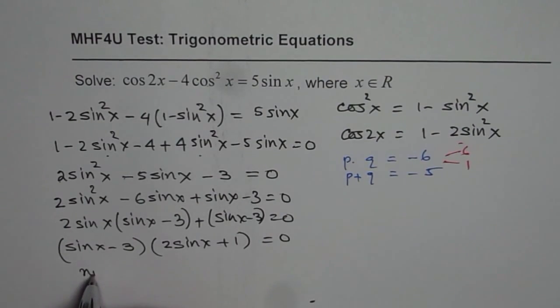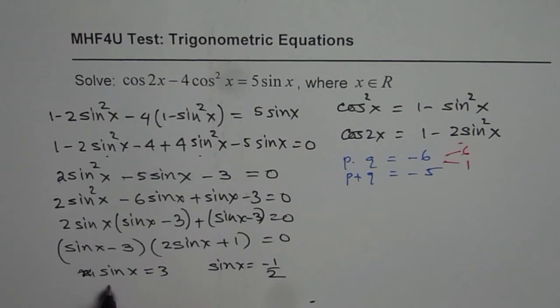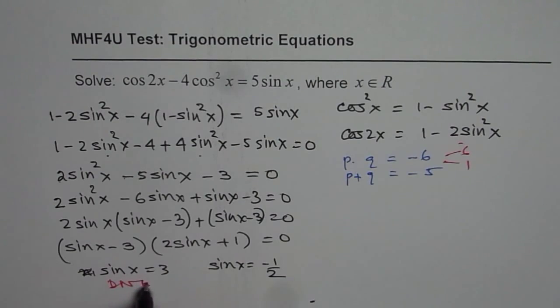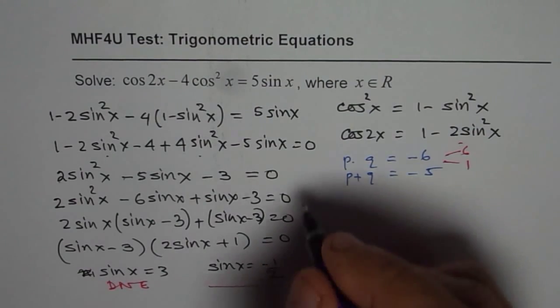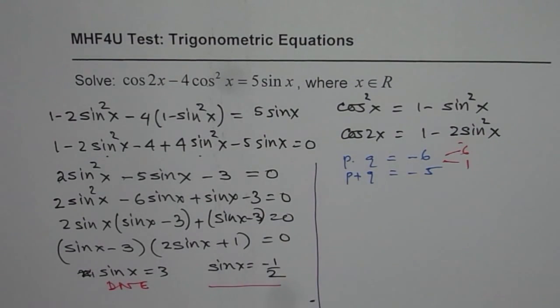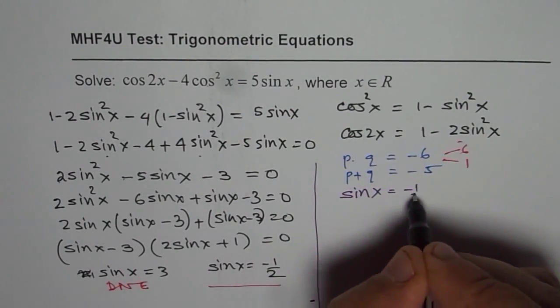That means sine x equals 3 is one of the solutions. The other is sine x equals minus half. Now, as you know, sine x equals 3 does not exist. That is not a solution. So we will forget about that, but find solution for sine x equals minus half.